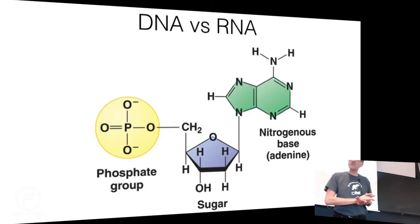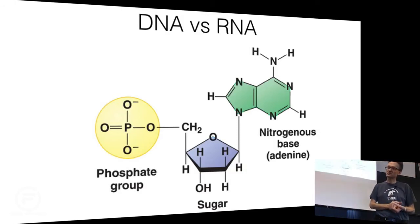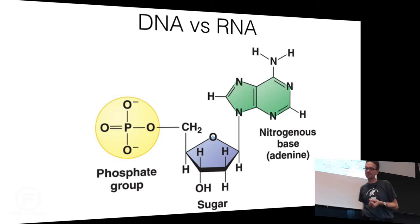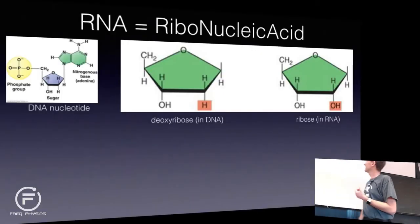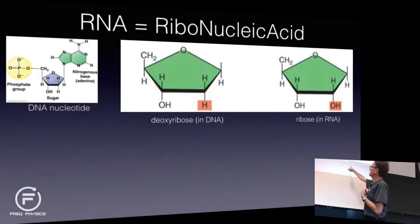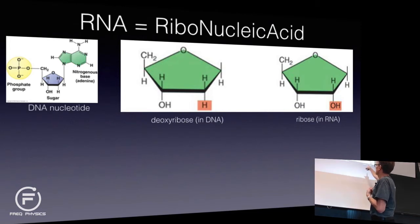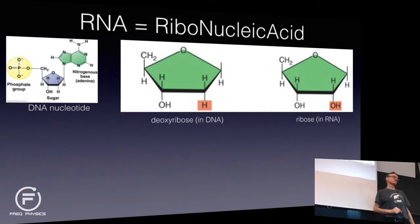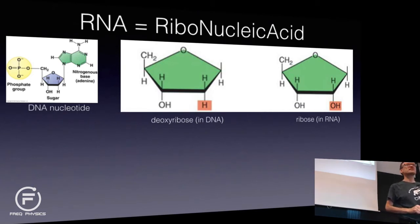There is another type of molecule called RNA. If you take the sugar in DNA, we have an OH and an H group. In RNA, you have two OH groups. That's a tiny difference, but it will completely alter its stability and how it behaves.